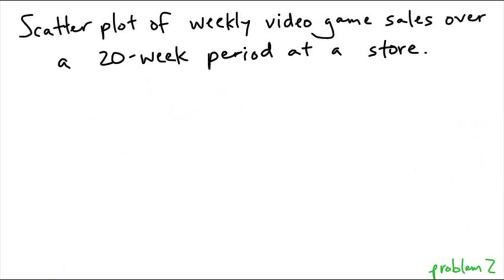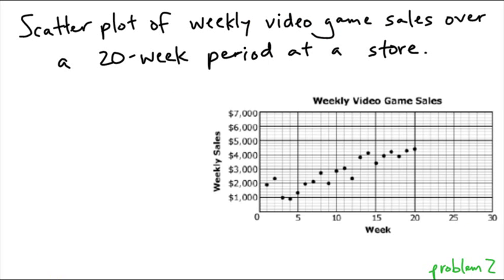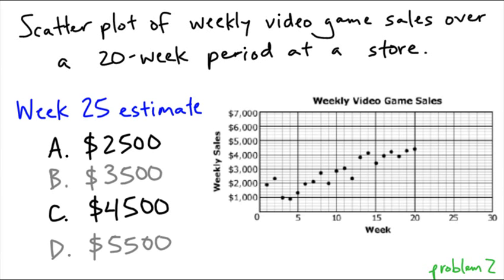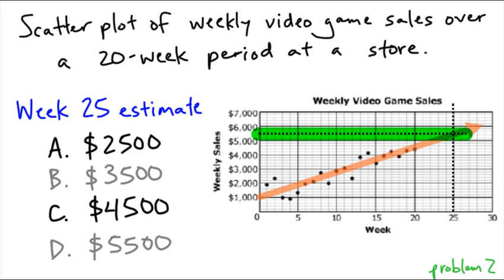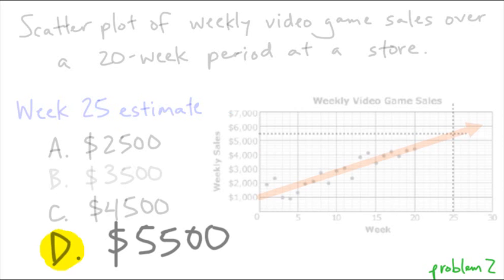Next, a scatter plot of weekly video game sales over a 20-week period at a store. Here's this plot. Week 25 estimate — would you guess A, B, C, or D? Spoiler alert. You can see the data goes on a trend like that. Week 25, if you go straight up and over, you can see the obvious choice is D, $5,500. It's just an estimate.